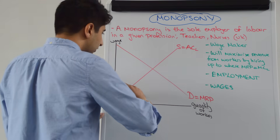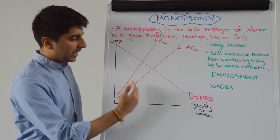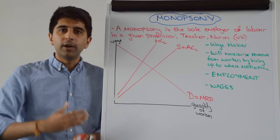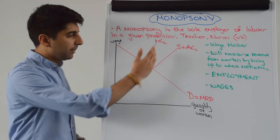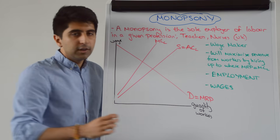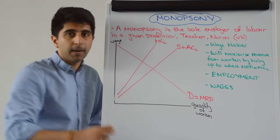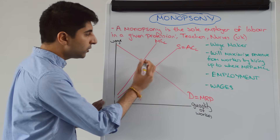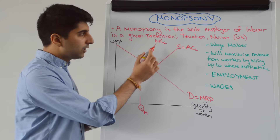This implies that the marginal cost of labour is greater than the average cost of labour. As an extra worker is hired, it's not just that one worker who gets the higher wage — it's all the previous workers too. Hence the marginal cost of labour is upward sloping and greater than the average cost of labour. The monopsonist will employ workers up until where MRP equals the marginal cost of labour, maximising the revenue each worker brings to the firm.